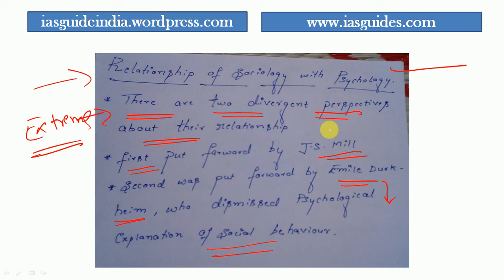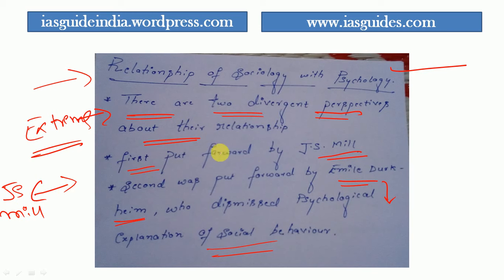Durkheim argues that society is an independent agent that exists outside and above the individual. Society and the individual are not closely related — society is above the individual. These are two divergent views: J.S. Mill on one extreme and Durkheim on the other.